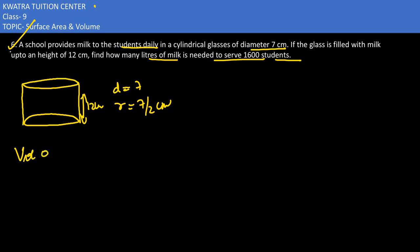So we would be finding a volume of one cylinder, which we know is equal to pi r square h.